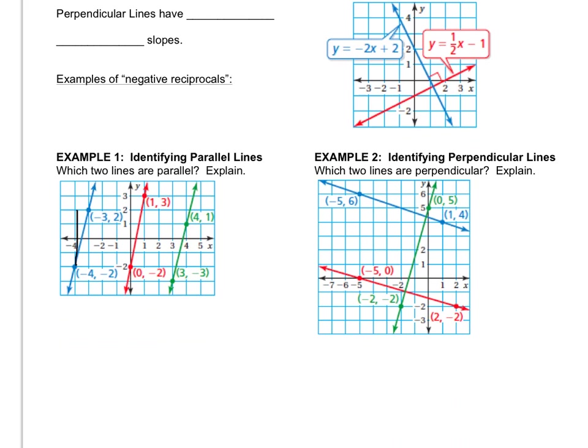The slope of the blue line is up four, right one. So that's going to be a slope of four over one. This red line is up, oh, five, right one. So this has a slope of five over one. So very close, but not exact.